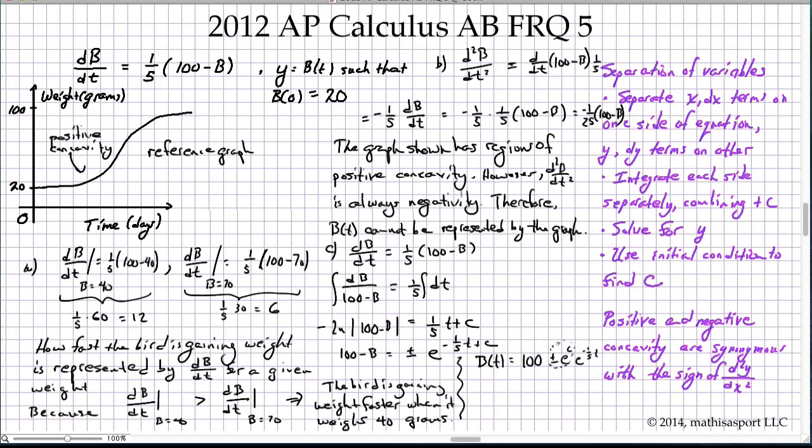To know that 20 equals 100 minus e to the 0 times this constant. Okay, this plus or minus e to the C. And so this has to be 80.